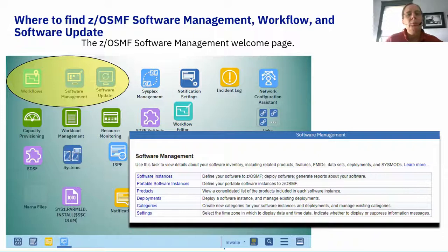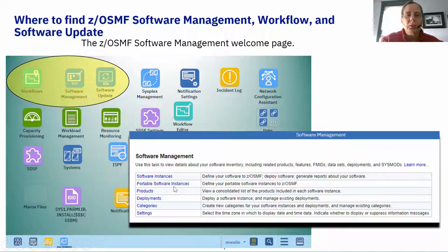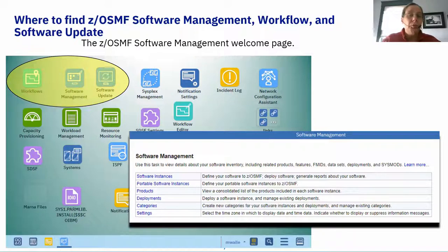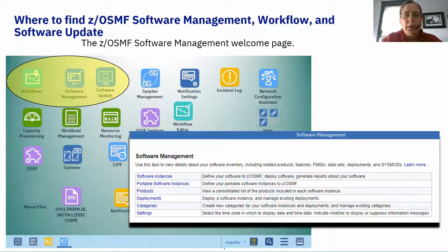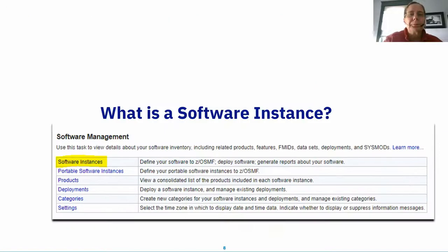Today I'm mostly going to talk about Software Management and a little bit about Workflows, because that covers the product install capability. Software Update — which is how you put fixes on — will be covered in the next session. When you launch into Software Management, you can see a list of items it can do: software instances, portable software instances, products, deployments, categories of software, and general settings.